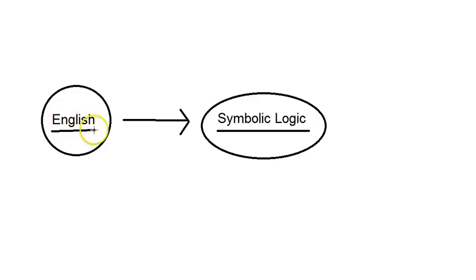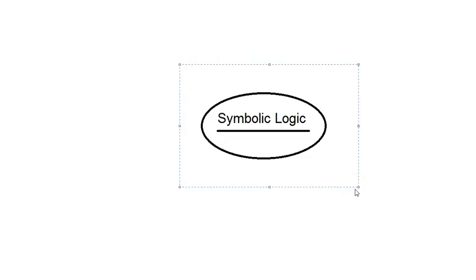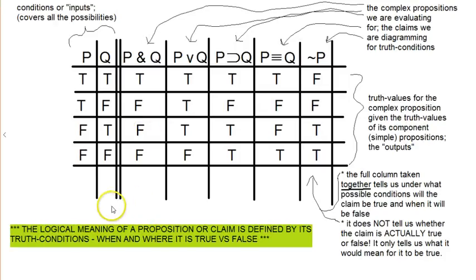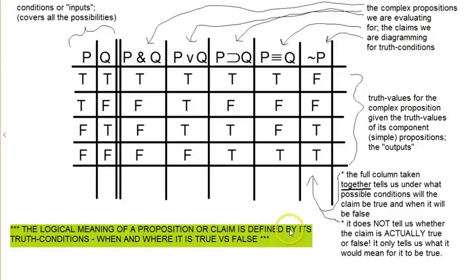They try to talk about the English stuff first and how to do the translation without really knowing how the symbol language works. So for the time being, we're going to forget about English and English arguments and just focus on symbolic logic — what's happening with this logical symbol language and how meaning is expressed here. The logical meaning of a proposition in symbolic logic is defined by its truth conditions.